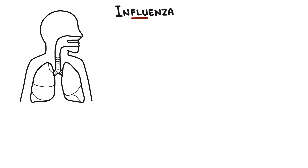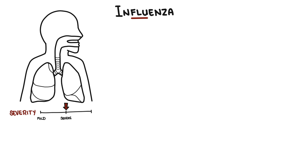Influenza, commonly known as the flu, is a contagious respiratory illness that affects the nose, throat, and sometimes the lungs. It ranges in severity from mild to severe and can be fatal in extreme cases. The most effective way to combat the flu is by getting vaccinated each year.